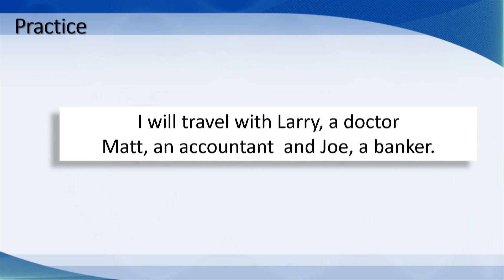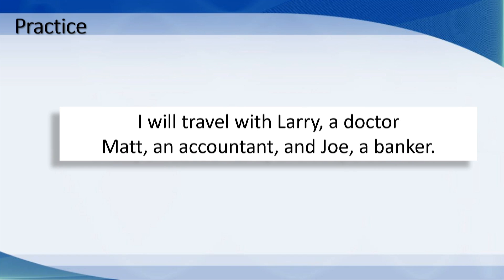One last try: 'I will travel with Larry, a doctor; Matt, an accountant; and Joe, a banker.' This sentence already contains commas that separate the names of people from the job each one does — Larry is a doctor, Matt is an accountant, and Joe is a banker. The semi-colon is used to separate each person and their job from the others and to avoid confusion.